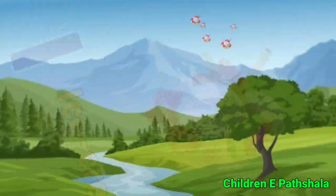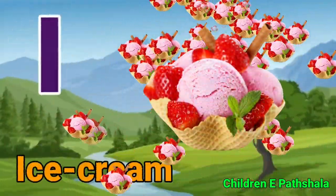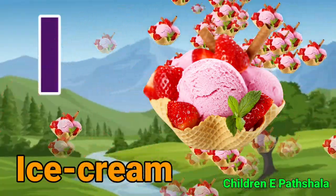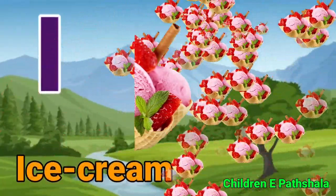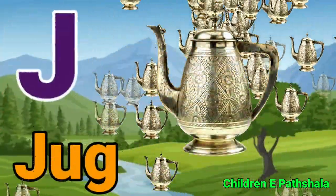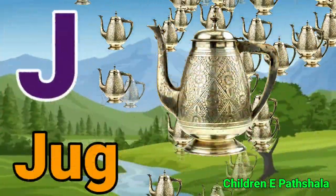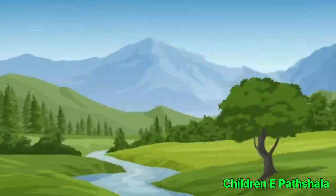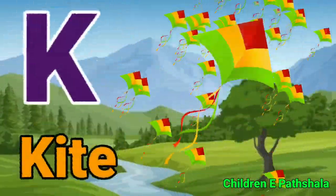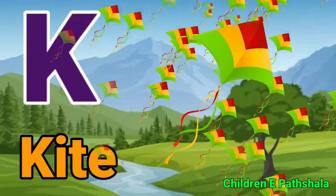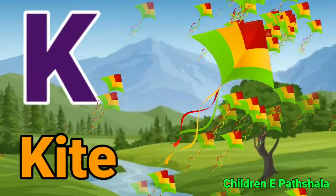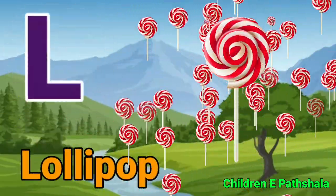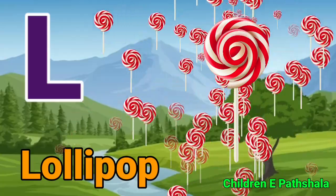I for Ice Cream. J for Jug. K for Kite. L for Lollipop.